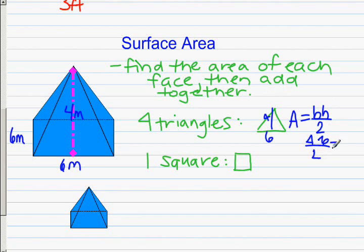So we get 4 times 6 over 2, and that ends up being 12, and it's meters squared since it's area. But we have 4 triangles, so we're going to say 4 times 12, and it's going to give us an area of 48 meters squared for all the sides of the pyramid.